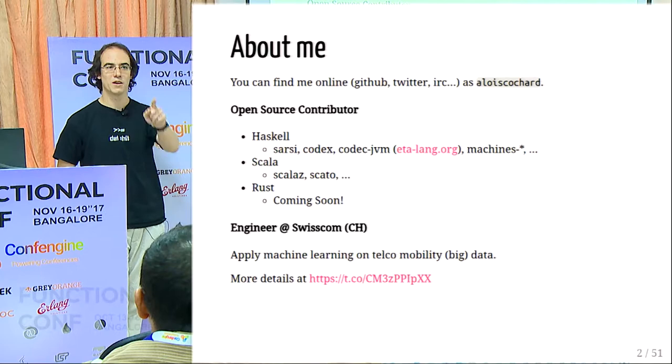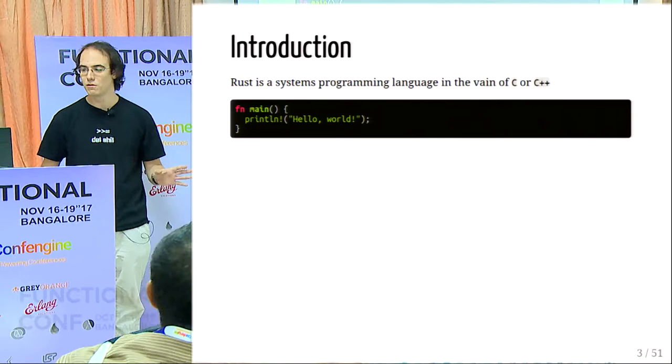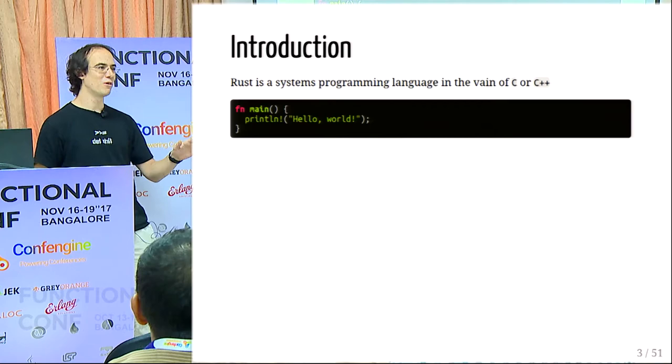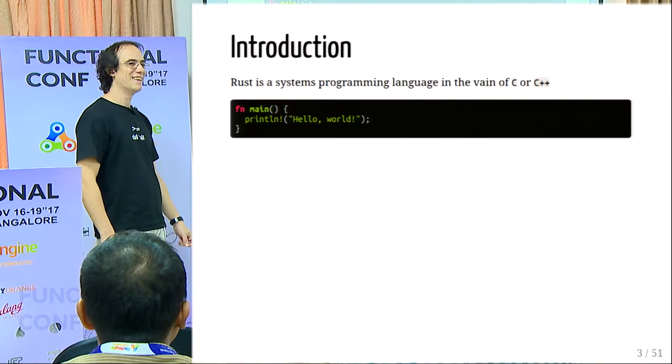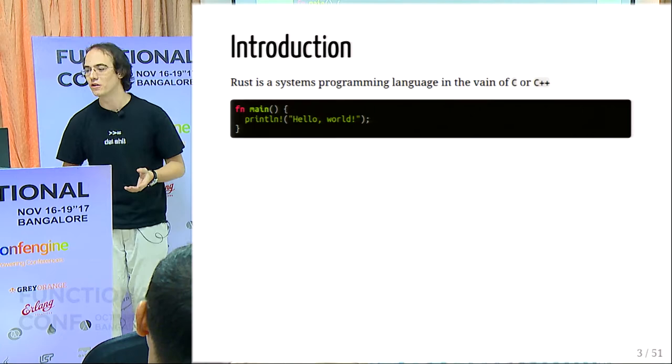Rust is a system programming language in the vein of C or C++. Most people here can read some C code, right? But do you think you can write safe C code? Because once you start using C or C++, you can write efficient code, but to make it safe is complex. There are a lot of ways that you can make things wrong.